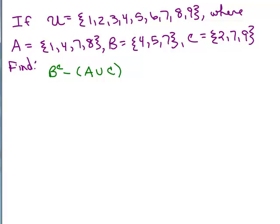So B complement, what does that mean? That means everything in the universal set except the elements in B. So everything except four, five, and seven will be one, two, three, six, eight, and nine minus—